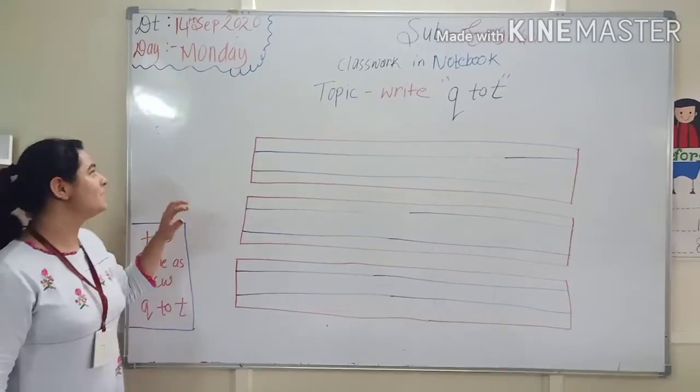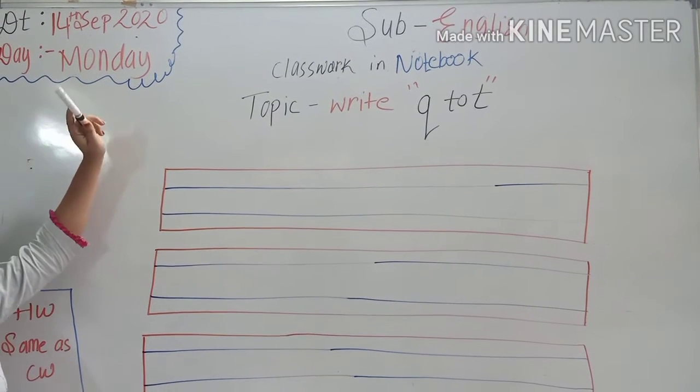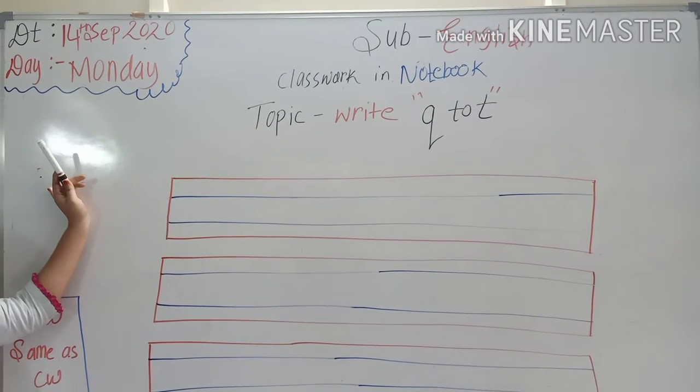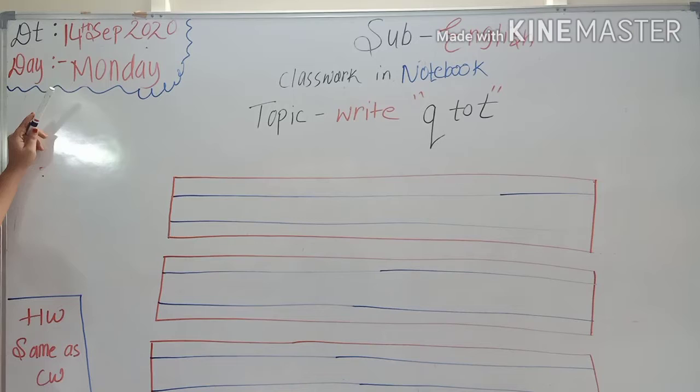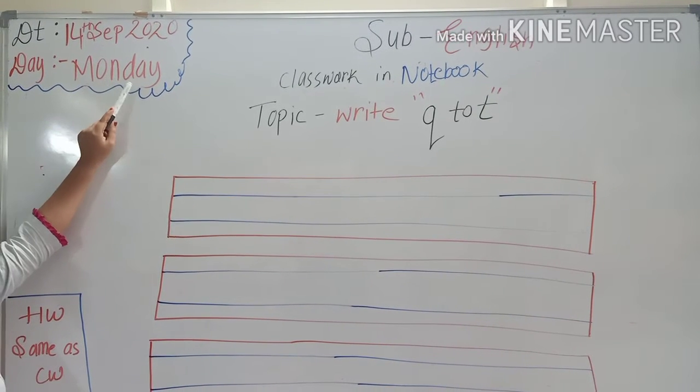First of all, which date is today kids? Yes, it's 14 September 2020. And which day is today kids? Tell me. Yes, Monday, spelling of Monday. Repeat with me. M-O-N-D-A-Y.